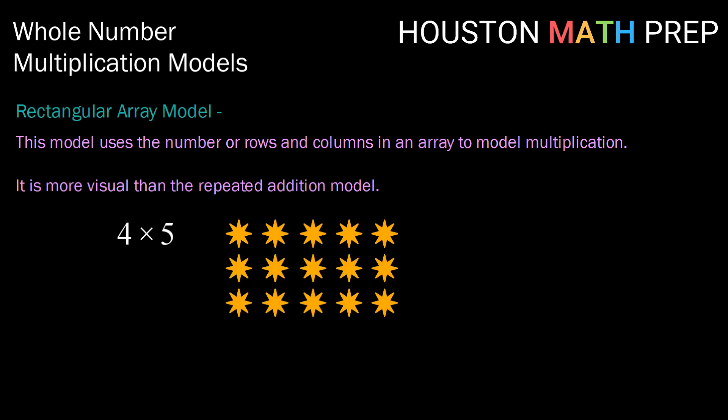So here's the first row, second, third, and fourth. Now in the beginning, students might then want to count up each of these items and realize that there are 20 items. So 4 times 5 is 20.